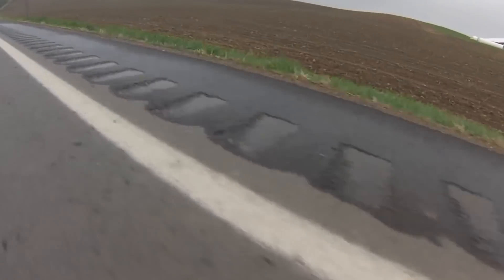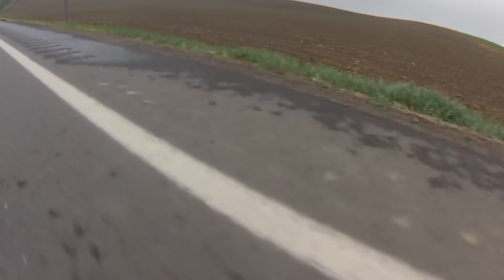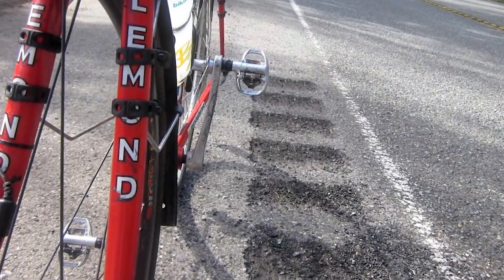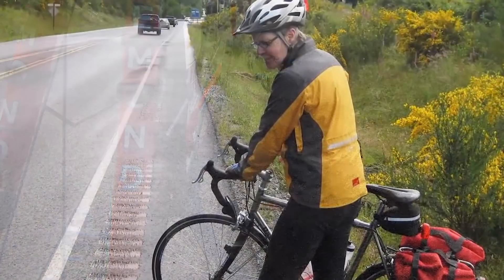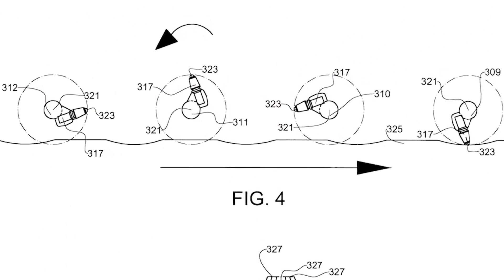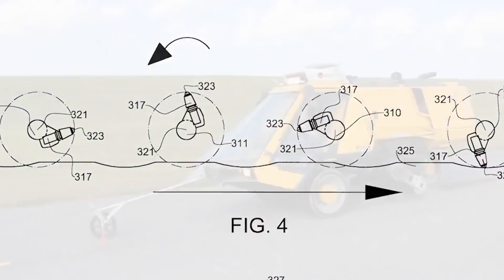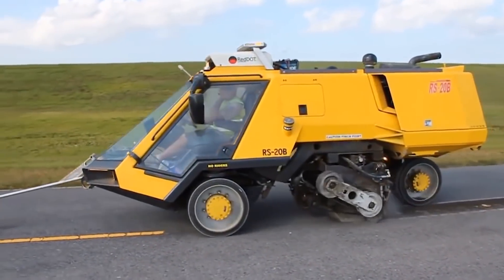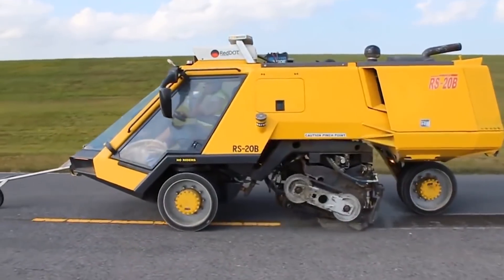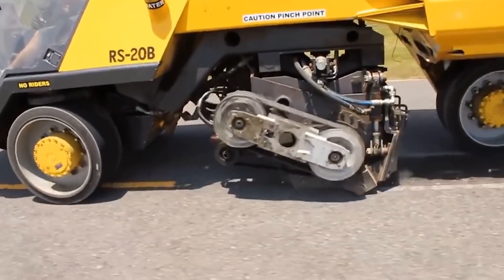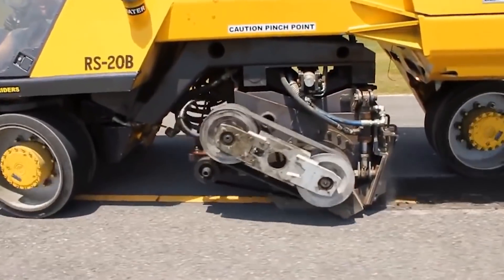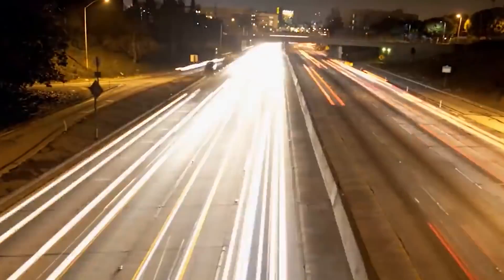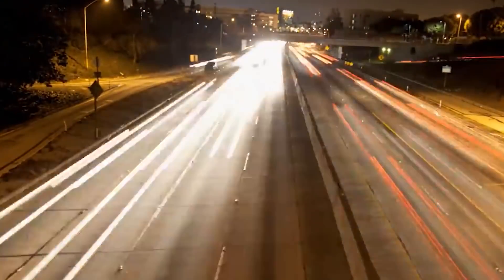It should be noted that Rumble Strips not only save lives, but it's also an economic system. In the coming years, a similar system of slots will be installed on an even greater number of new or upgraded roads, where the speed limit is 88 kilometers per hour or more.